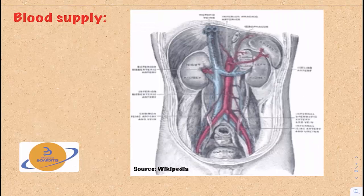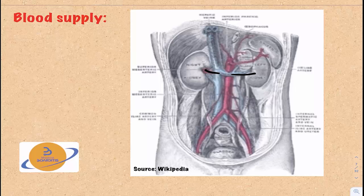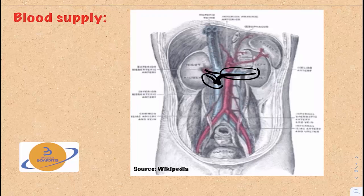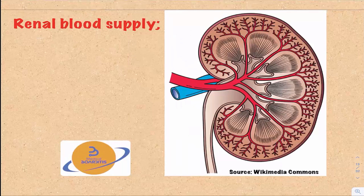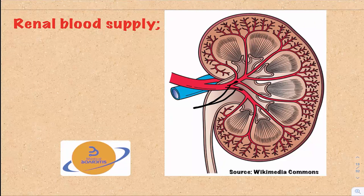The blood supply to the kidney: the abdominal aorta gives off a renal artery to each kidney — the right renal artery and the left renal artery. Venous drainage is via the right and left renal veins into the inferior vena cava. The left renal vein is slightly longer in course than the right renal vein. After entering the kidney, the renal artery divides into segmental arteries.